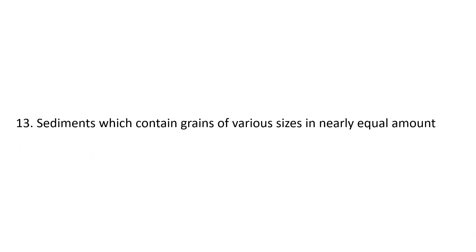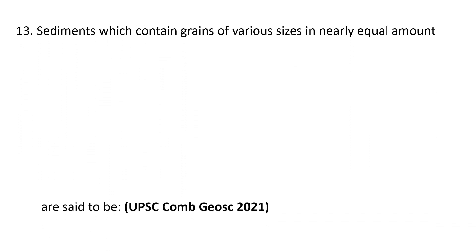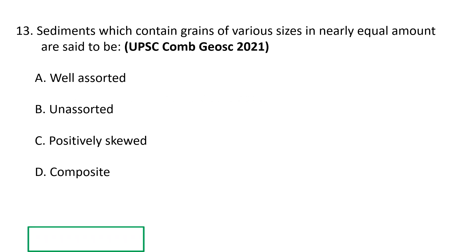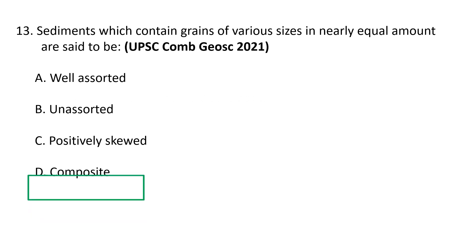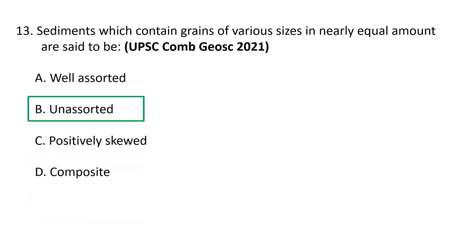Question 13: Sediments which contain grains of various sizes in nearly equal amounts are said to be: (a) well assorted, (b) unassorted, (c) positively skewed, or (d) composite. The correct option is B — unassorted.